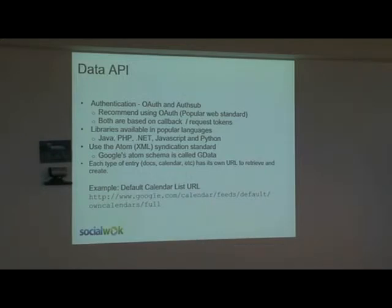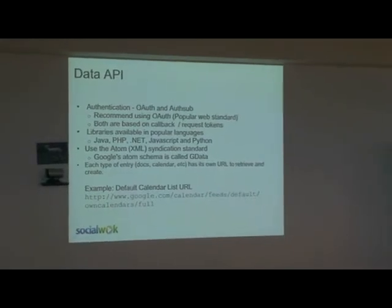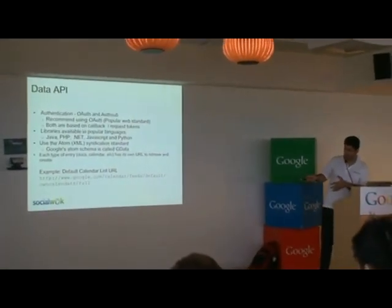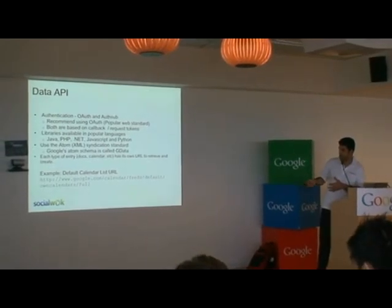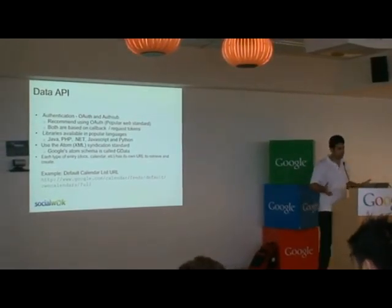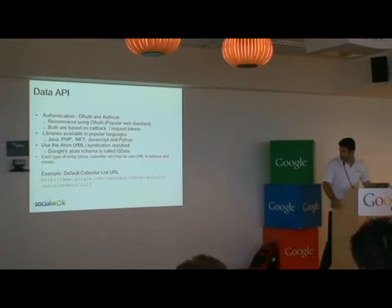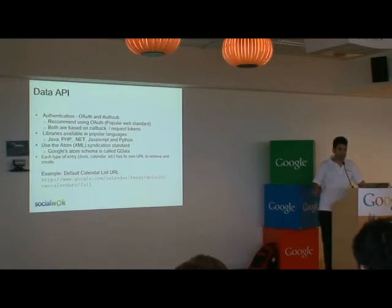The libraries I mentioned are available in the backend as wrappers that help you use the Google Data APIs really easily. In the backend, the Google Data API is implemented using Atom — it's an XML format, and the schema that Google uses is called GData. That's basically why they call them the Data APIs.